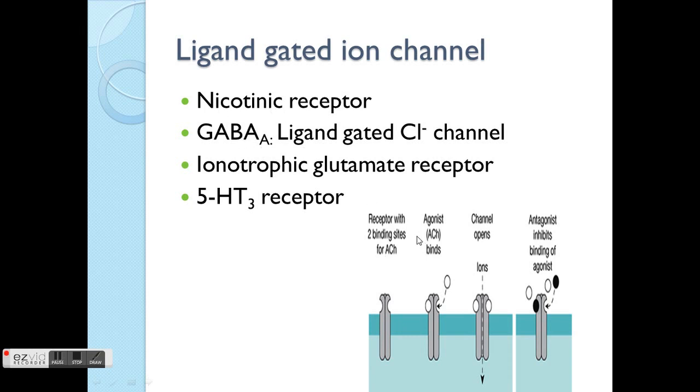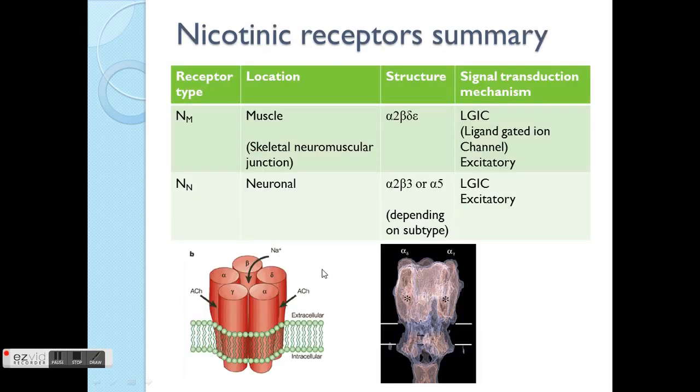For nicotinic receptors, it requires the ligand which is ACh, acetylcholine, binding. The ACh will bind at different subtypes. You can see in general the ion channels consist of different subtypes. It's like a few sticks being tied together to form a bundle.